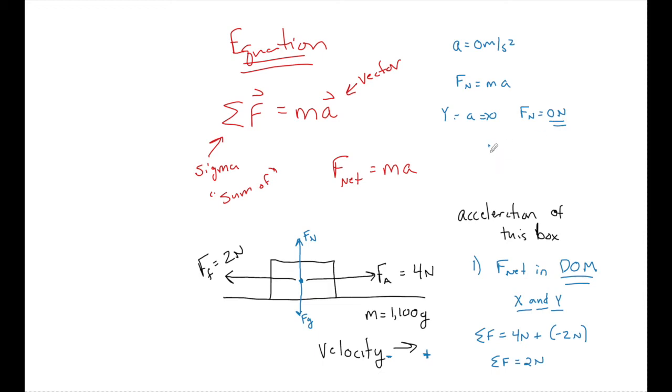Because if I just solve for F net and I call up positive and down negative, F net is equal to F normal minus F G, which equals zero, which then means that the force of normal must be equal to F G. So this is how we're going to use the acceleration of the box and Newton's second law to sometimes find variables that aren't explicitly given to us.